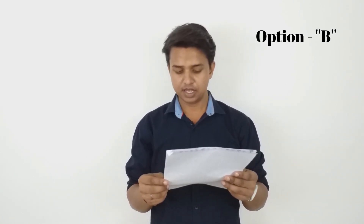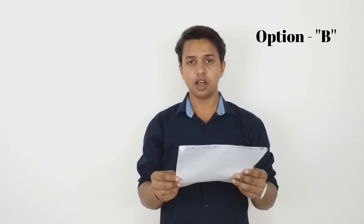Question 47: A word consists of 9 letters — 5 consonants and 4 vowels. Three letters are chosen at random. What is the probability that more than one vowel will be selected? The correct answer is option B, that is 17/42.